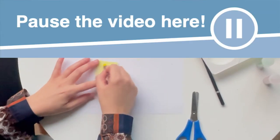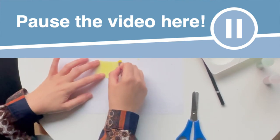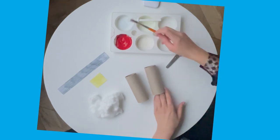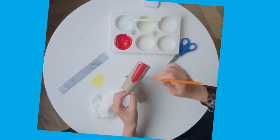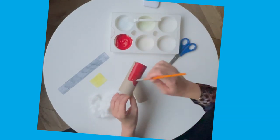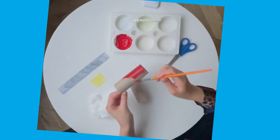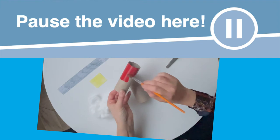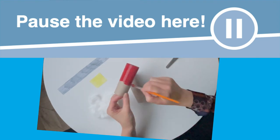Pause the video here until you are ready for the next step. Then take your two toilet roll tubes and paint them red before leaving them to dry. Pause the video here until you are ready for the next step.